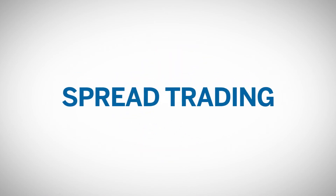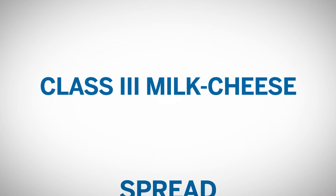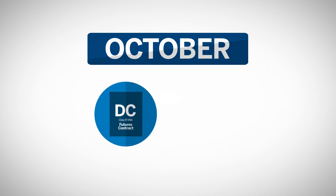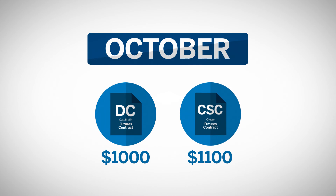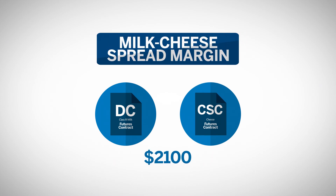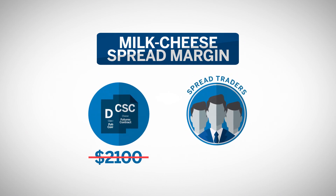One of the attractions of spread trading is the relatively lower risk versus outright futures positions and the subsequent lower margins. Let's see how this works with the Class 3 milk cheese spread. In October, the outright margin for Class 3 milk futures was $1,000 and the outright margin for cheese futures was $1,100. Rather than posting $2,100 to trade both futures contracts, the Class 3 milk cheese spread traders actually receive a 55% margin credit. In other words, the initial margin was $945, reflecting the lower risk in spreading the two contracts as opposed to trading each of them outright.